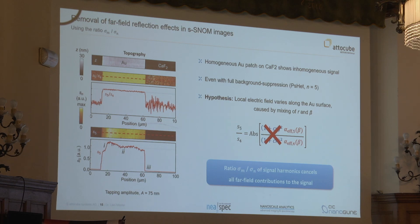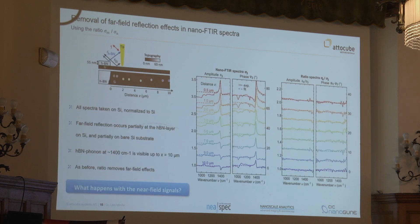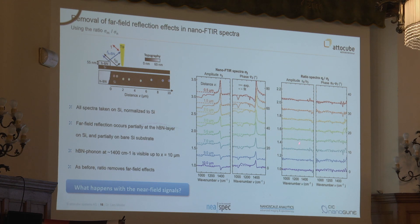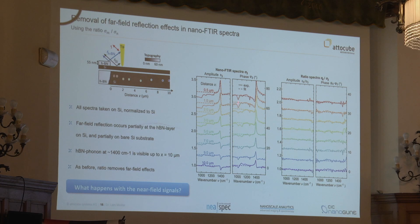In spectra — this is the same data as before — we can also plot the ratio of different harmonics, and this peak disappears. And also these other small things, I'm not fully sure what they are, but they also disappear. So this works.